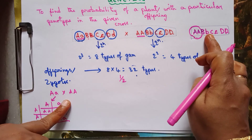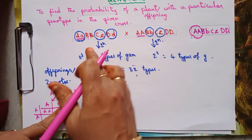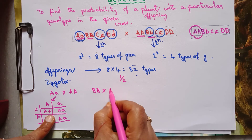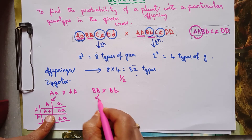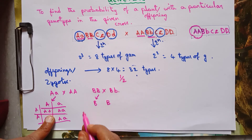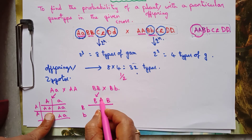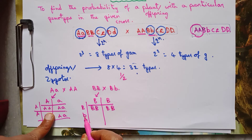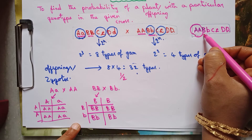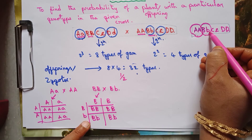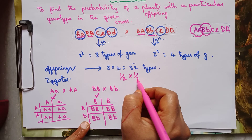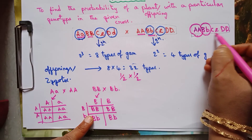Second gene: BB × Bb. Gametes from plant one are B and B; from plant two are B and b. The cross gives BB, BB, Bb, Bb — two out of four plants are Bb, so probability = 2/4 = 1/2.